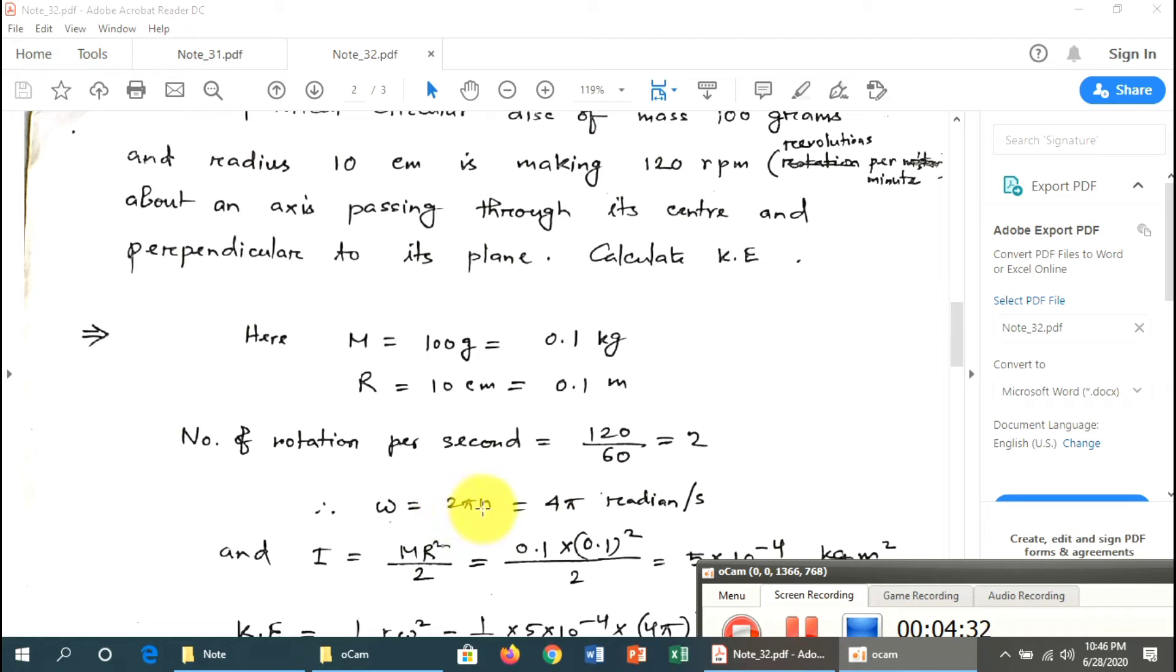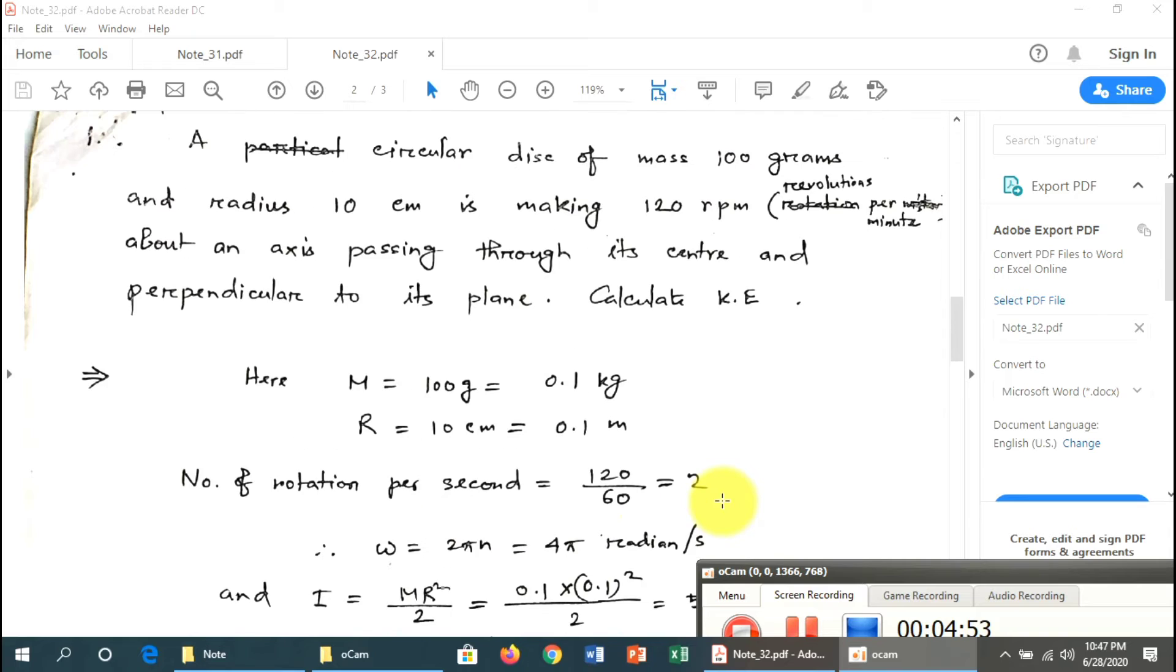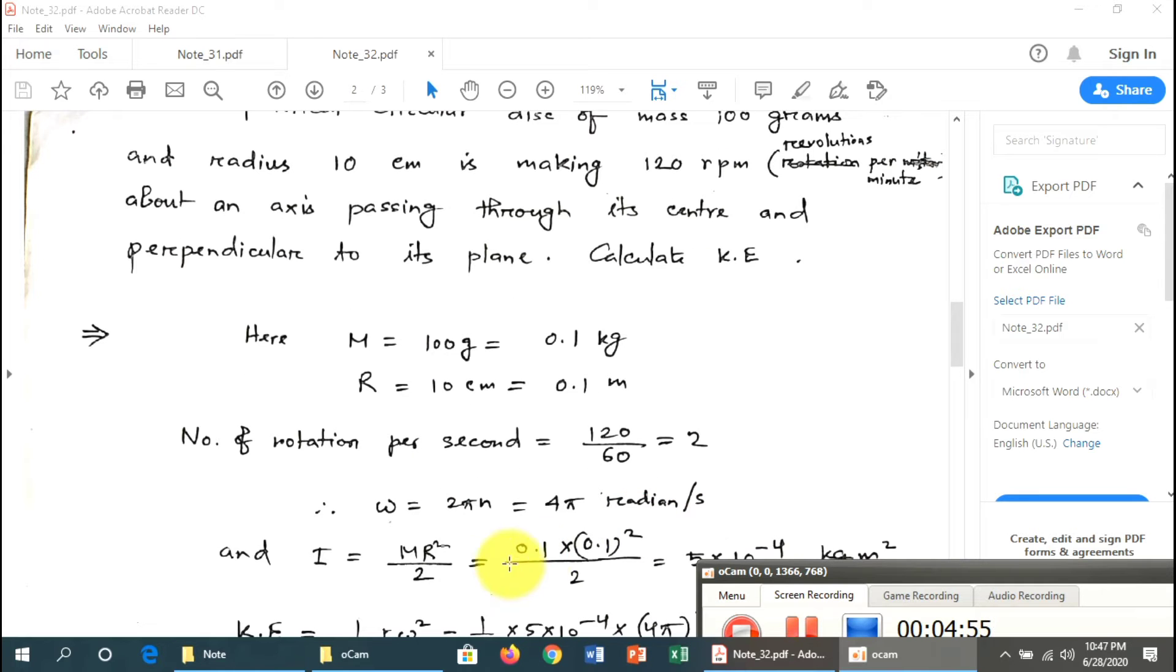Omega (ω) equals 2π times n, where n is the number of rotations per second. ω = 2π × 2 = 4π radians per second.